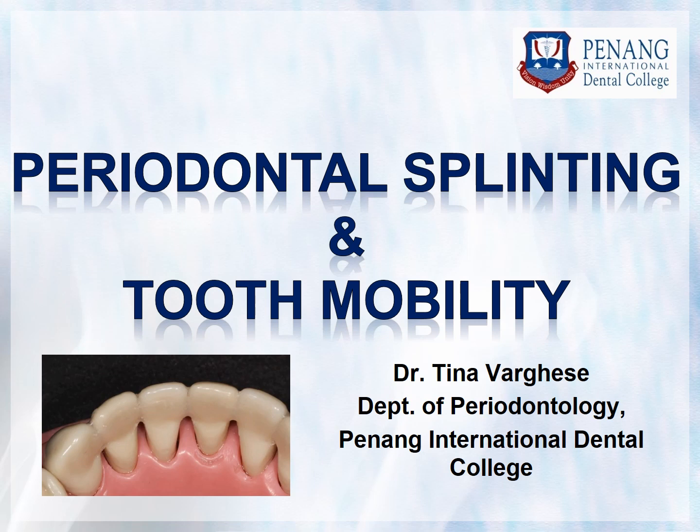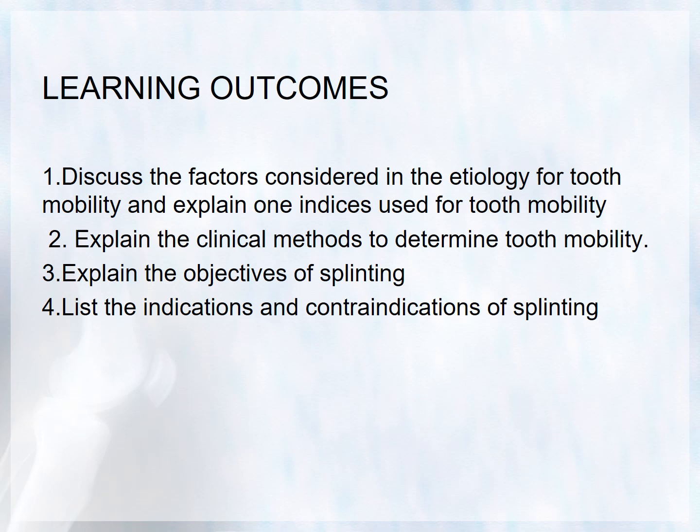Good morning to you all. Today's topic is on periodontal splinting and tooth mobility. Learning outcomes are: discuss the factors considered in the etiology for tooth mobility, explain what index is used for tooth mobility, explain the clinical methods to determine tooth mobility, explain the objectives of splinting, and list the indications and contraindications of splinting.